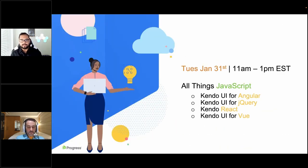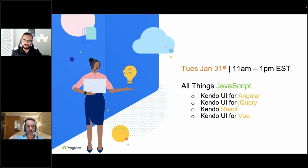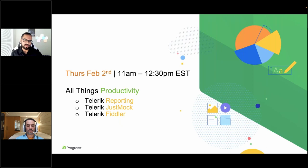Next week, on January 31st, we have all things JavaScript. That's our Kendo UI folks who are going to talk about Angular, jQuery, React, and Vue, so you can build your modern web apps however you want. And then we close off next week with another webinar on productivity — things that are critical to your enterprise workflows, like reporting, JustMock, and Fiddler. Everyone loves Fiddler.